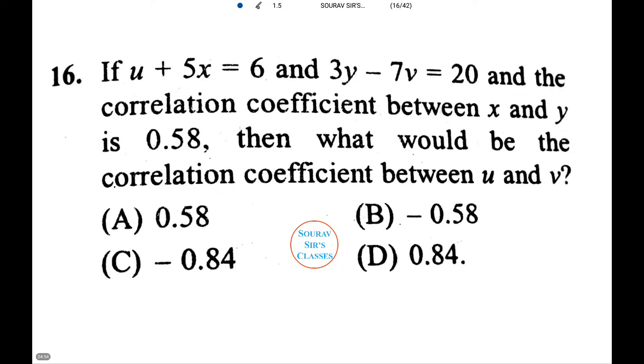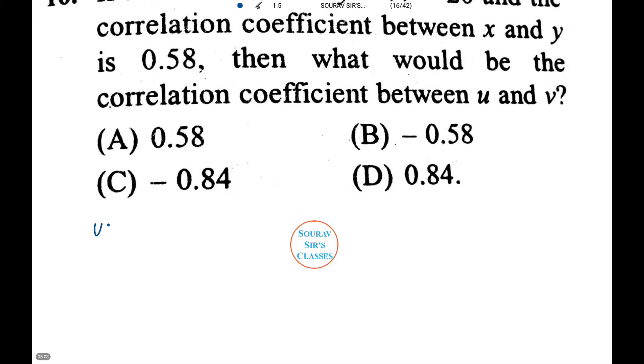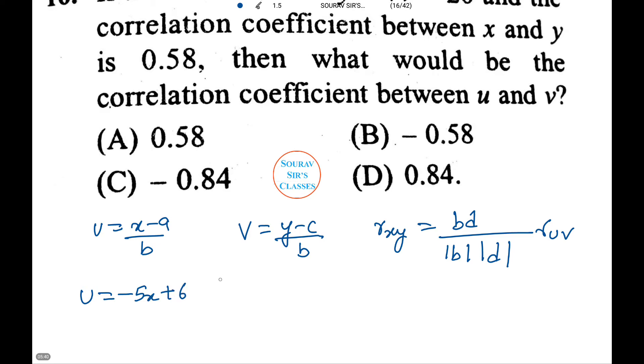In the next question we have U plus 5X equals 6 and 3Y minus 7V equals 20, and the correlation coefficient between X and Y is 0.58. Then what will be the correlation coefficient between U and V? We know that U equals X minus A by B and V equals Y minus C by D. Therefore rXY equals BD mod by mod BD times rUV.